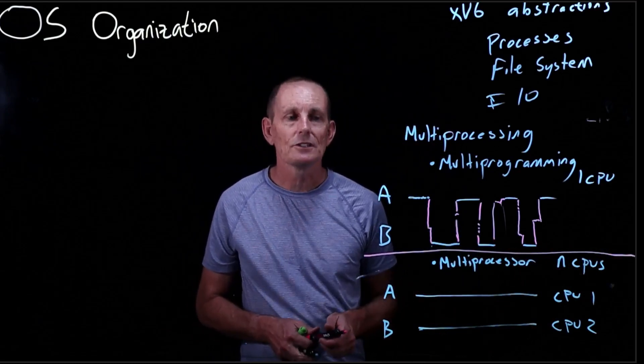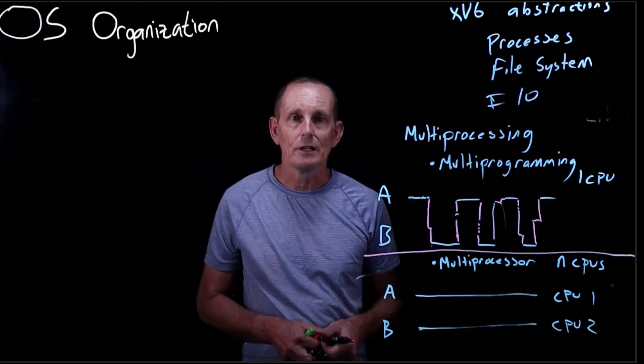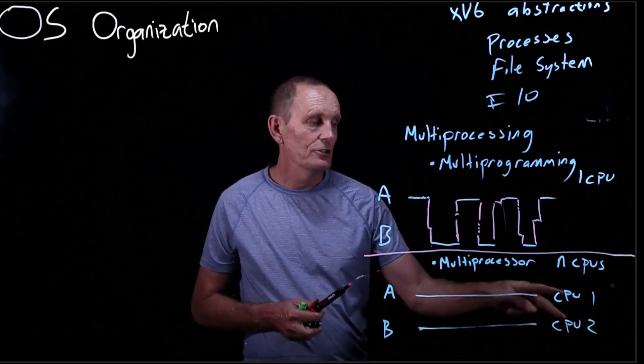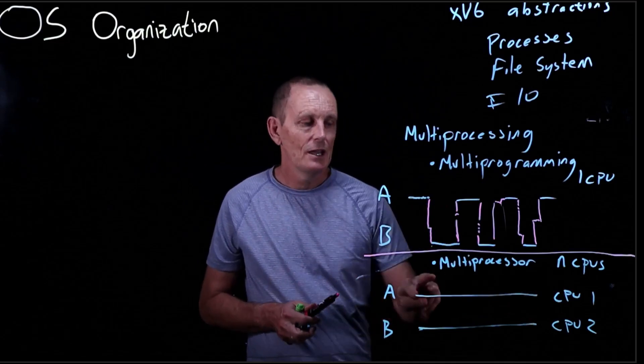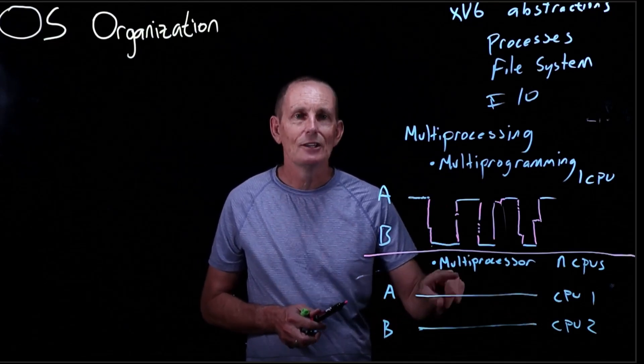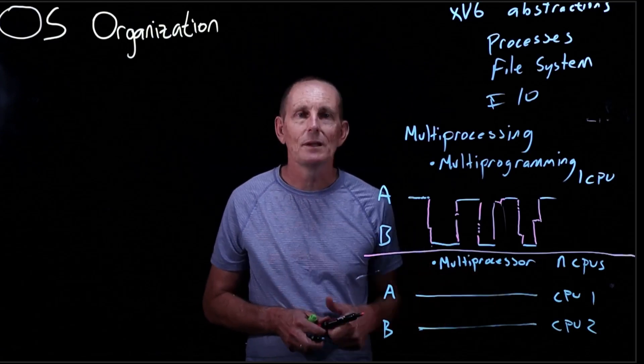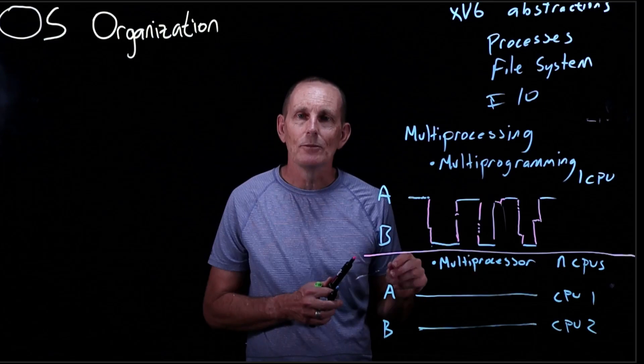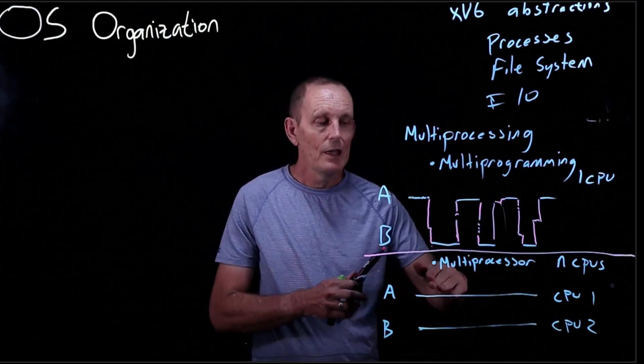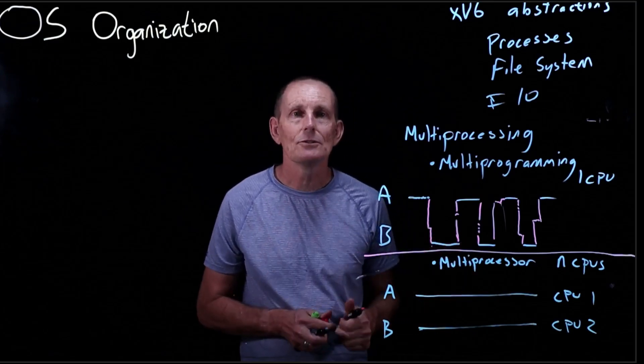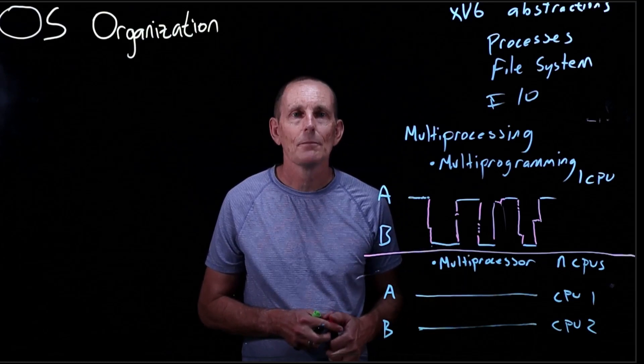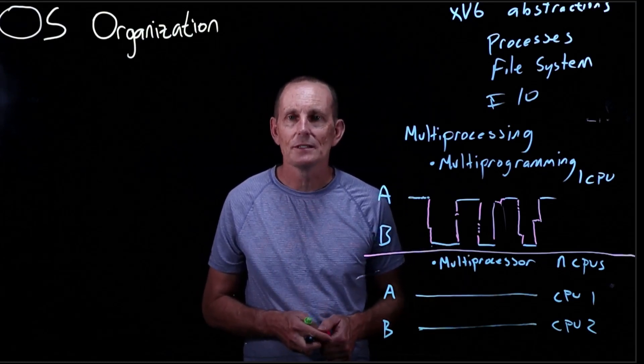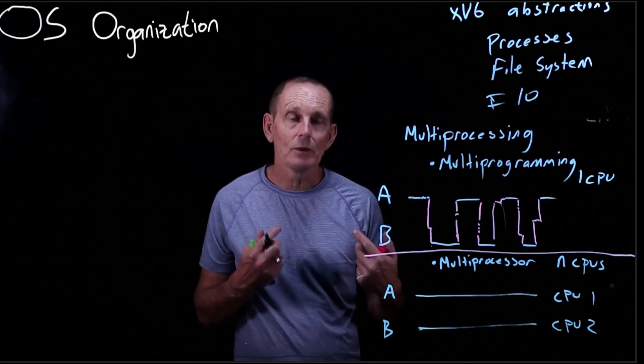In the bottom case here with multiprocessing, we have got A running on its own CPU and B running on its own CPU. Now there still could be a switching. If we had four processes on a two CPU machine, then let's say A and C might be switching and B and D might be switching. Or maybe A and B would run for a while and then when B stops, D runs for a while. There could be migration between CPUs. But that's the difference between multiprogramming and multiprocessing.